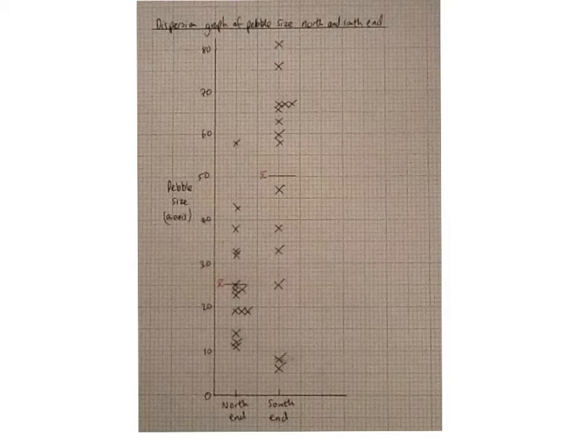Now standard deviation is a statistical method to objectively work out how spread out the data is from the mean. So looking at the north end of the beach, you can see the minimum and the maximum, you can see where the mean is, how spread out is that? And we can also have a look at the south end of the beach, the mean there which is higher, the maximum and the minimum here, how spread out is that? Is one more dispersed than the other? Standard deviation will help us to objectively see this.